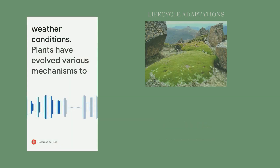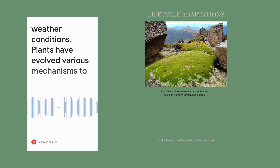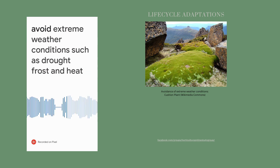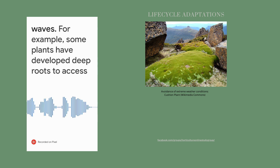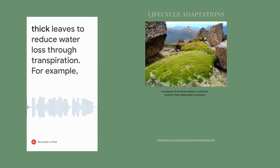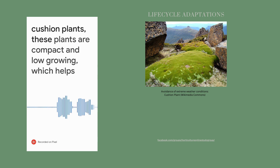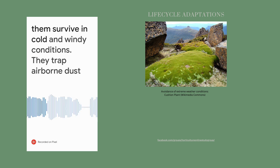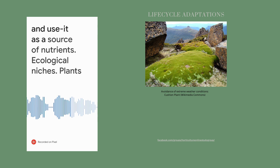Avoidance of extreme weather conditions. Plants have evolved various mechanisms to avoid extreme weather conditions such as drought, frost, and heat waves. For example, some plants have developed deep roots to access water from underground sources, while others have developed thick leaves to reduce water loss through transpiration. For example, cushion plants — these plants are compact and low-growing, which helps them survive in cold and windy conditions. They trap airborne dust and use it as a source of nutrients.